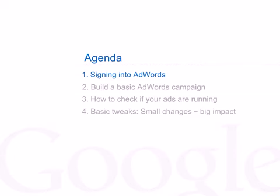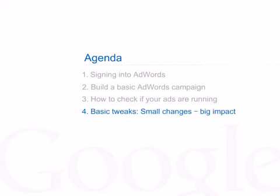Let's have a look at the agenda for this class. First, we will quickly show you how you can sign into AdWords and what to do if you forgot your sign-in details. Next, we'll show you how to build a basic AdWords campaign. Even if you have already created one, it will be useful to review what makes a successful AdWords campaign. After that, we'll take a look at how you can check that your AdWords ads are running properly. And finally, we'll go over some basic tweaks that will help you improve your AdWords performance.